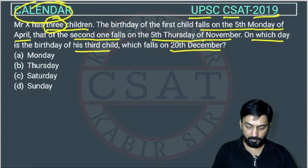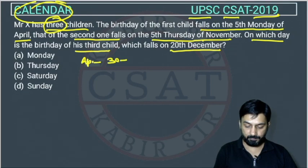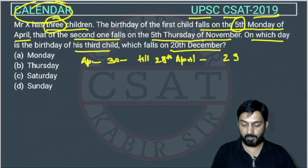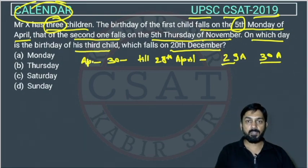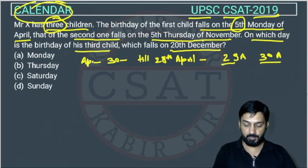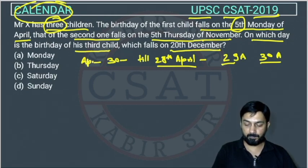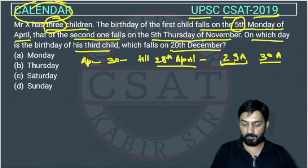Now, the fifth Monday in April. In April, there are 30 days. Till 28th April, only four weeks will be completed. So the fifth Monday will fall on either 29th or 30th April. This is important — we need to know the fifth Monday must be on 29th or 30th April, since the fifth week starts after 28th April.